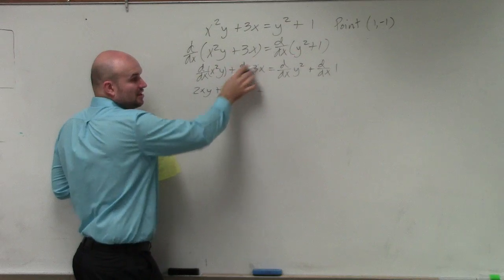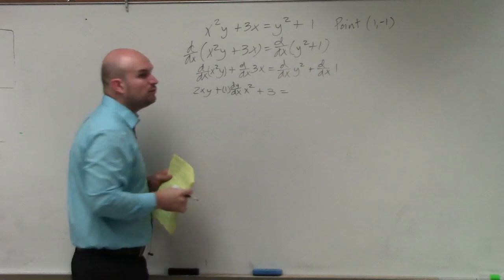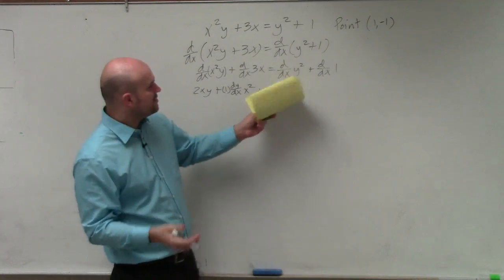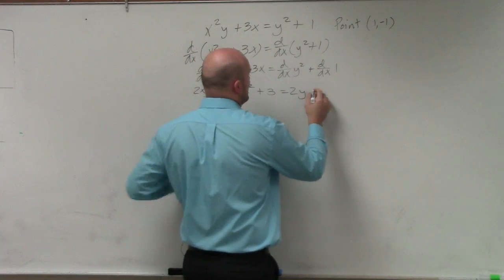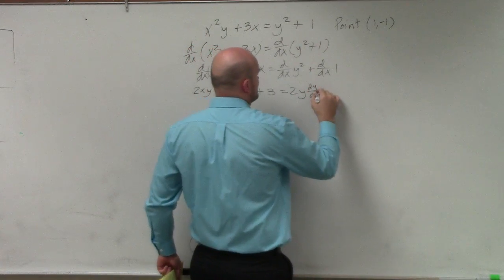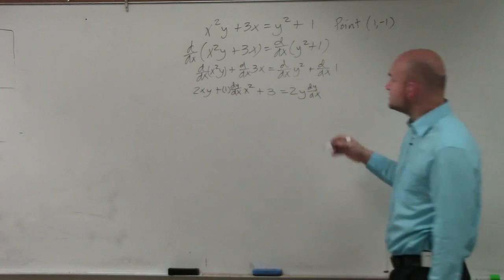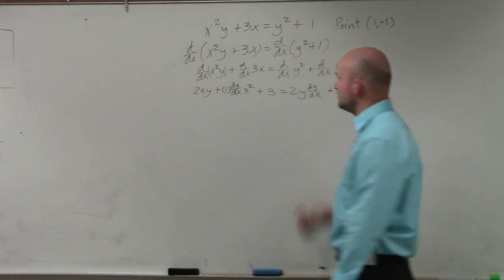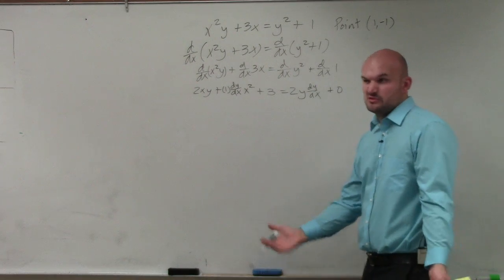The variables are the same, so we're fine to find the derivative there. The derivative of y² with respect to x is going to be 2y dy/dx, and the derivative with respect to any variable of a constant is always 0. Does everybody follow me?